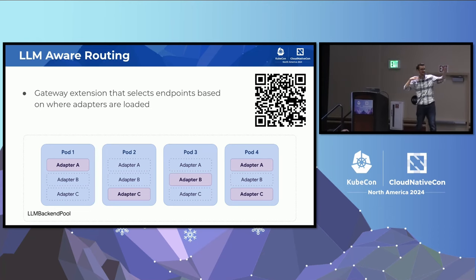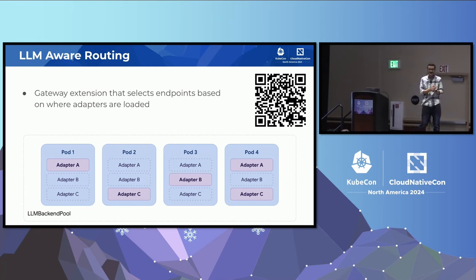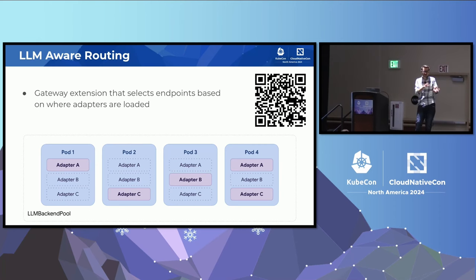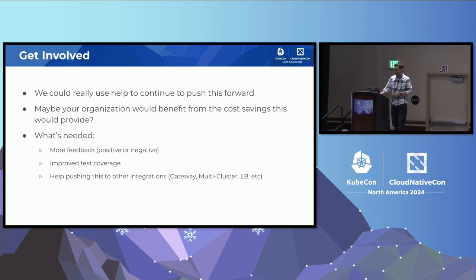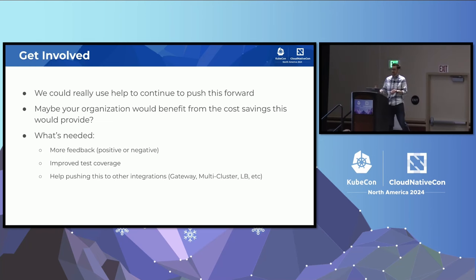This is a bit of a stretch, but I want to throw it out there: there's a different kind of routing with similar constraints — what I'd call LLM-aware routing. That's basically understanding where adapters are loaded, where models are loaded on pods, and routing based on that. It's a project I've been working on more and more. If you're interested, we have an inference gateway project under working group serving. And get involved — there's a lot to do, lots of integrations still to be done. Come get involved if you have a use case that isn't covered. We need more feedback, improved test coverage, and if we need more features, let us know.